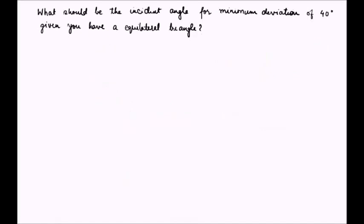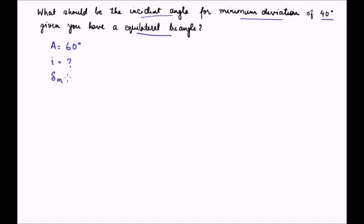This question states that we have an equilateral triangle prism and we want to find what should be the incident angle for a minimum deviation of 40 degrees. The information we have: since it is an equilateral triangle, the angle of the prism equals 60 degrees. We need to find the angle of incidence, and the angle of minimum deviation delta-min is equal to 40 degrees.